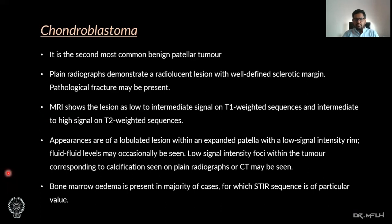Chondroblastoma is the second most common benign patella tumour. Plain radiographs demonstrate a radiolucent lesion with a well-defined sclerotic margin, and pathological fracture may be present. MRI shows the lesion with low to intermediate signal intensity on T1-weighted sequence and intermediate to high signal intensity on T2-weighted sequence, with a lobulated lesion within an expanded patella and a low signal intensity rim. Fluid-fluid levels may occasionally be seen, and low signal intensity foci corresponding to calcification can be identified.